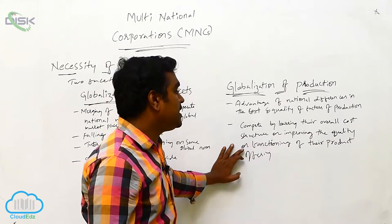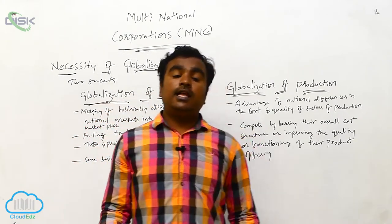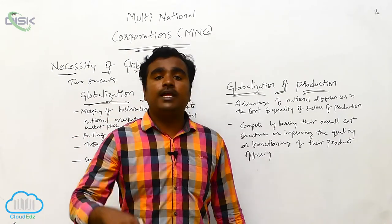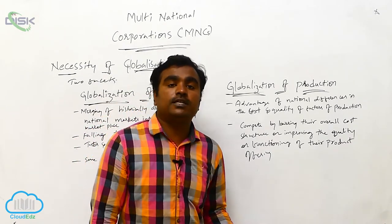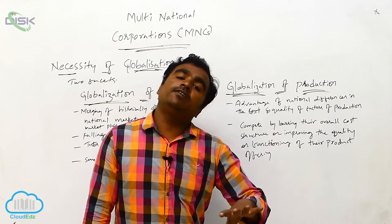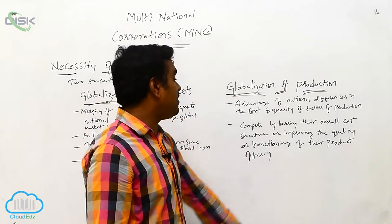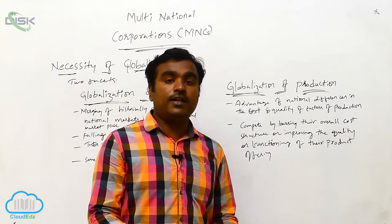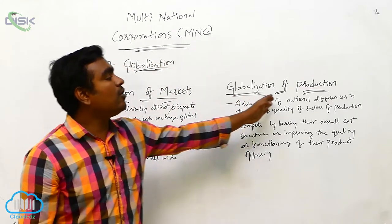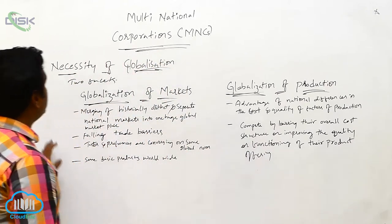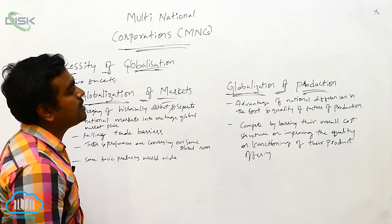Companies can compete with other countries by lowering their overall cost structure or improving the quality and functioning of their product offerings. Globalization facilitates lower cost of production and lower employment costs, which in turn improves the quality of the product offering. That is what globalization of production facilitates. These are the two facets of globalization: globalization of markets and globalization of production.